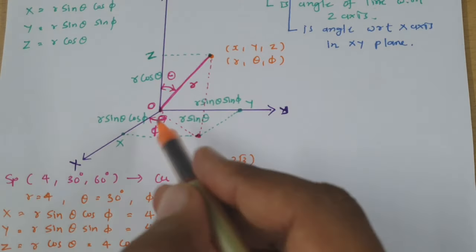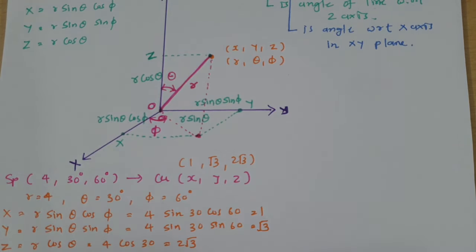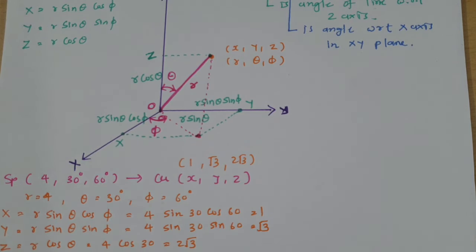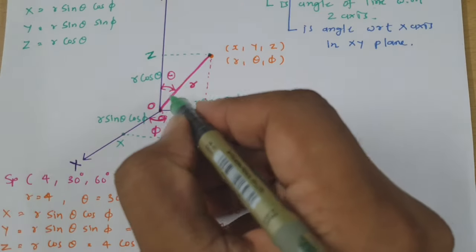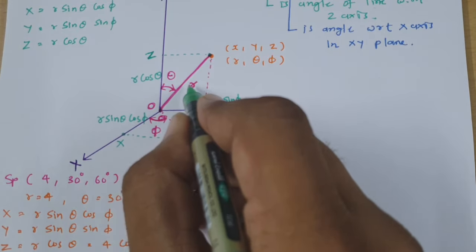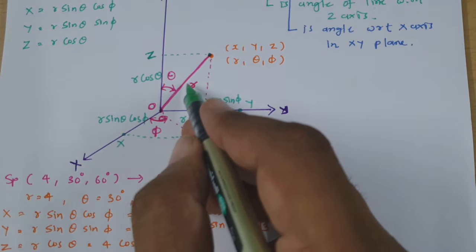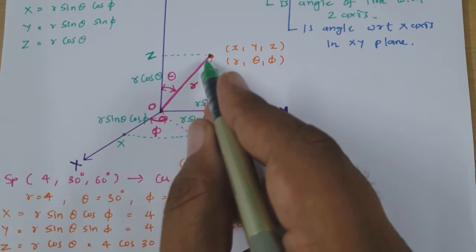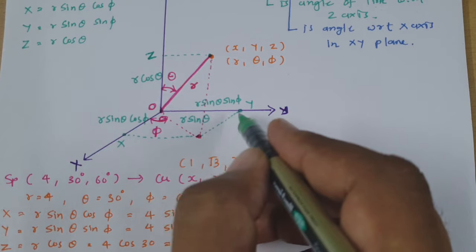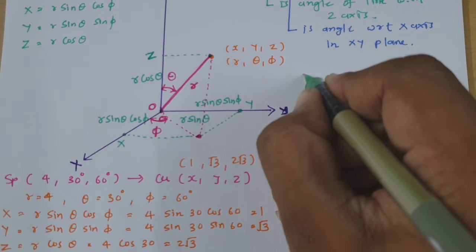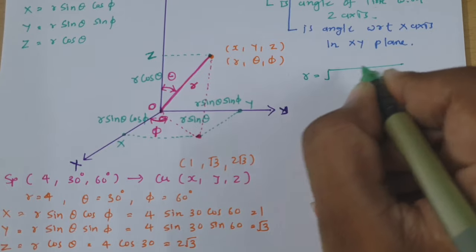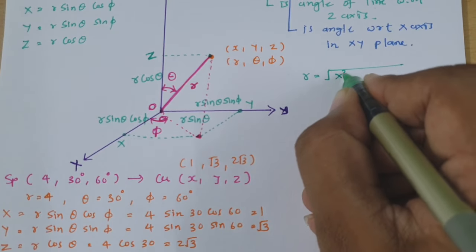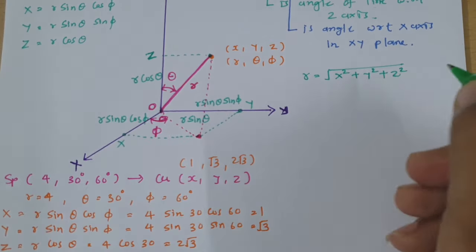Now the reverse conversion is also possible. In some cases you might have Cartesian coordinates and need to calculate Spherical coordinates from them. For that, given X, Y, Z, first we calculate R. R is the radius, so that is the square root of X squared plus Y squared plus Z squared. You can cross-verify this: substituting the expressions gives R squared times sin squared Theta plus cos squared Theta, where sin squared Theta plus cos squared Theta equals 1, confirming R equals square root of X squared plus Y squared plus Z squared.